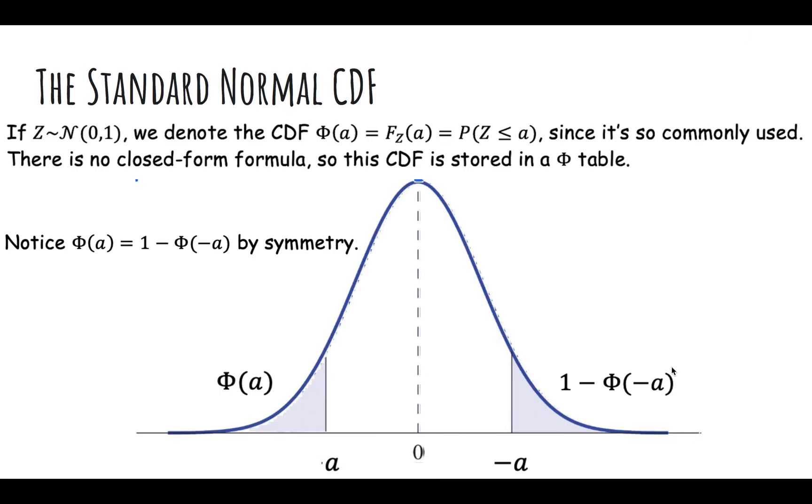Remember the standard normal CDF. Suppose theta hat is normal, and this might be true if theta has a sample mean, which we've seen a lot, by the central limit theorem. It's actually pretty likely that our theta hat is normally distributed. Just remember that phi of a value is the probability the standard normal is less than that value.